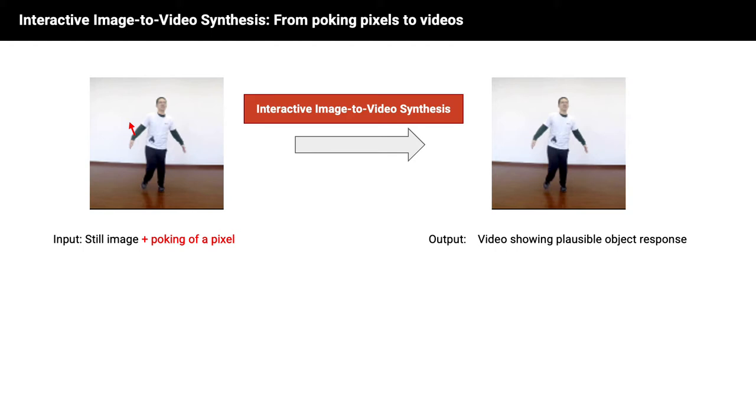Based on these two inputs, we want to generate a video showing a plausible response of the entire object to this manipulation. So in this example, we want the person to raise his right arm up to the defined endpoint.